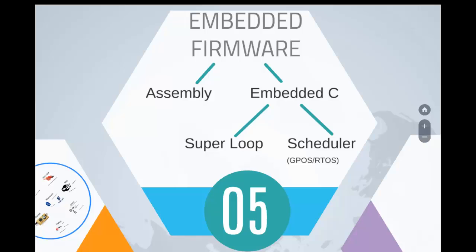Embedded C code can adopt two major styles of programming: super loop or scheduler. In a super loop, programming tasks are done one after another in a big infinite loop. In a scheduler — implemented by either a general-purpose OS or a real-time operating system — tasks are scheduled based on different priority levels. When a higher-priority task needs resources, the OS can preempt the lower-priority task and allocate resources to the higher-priority task.